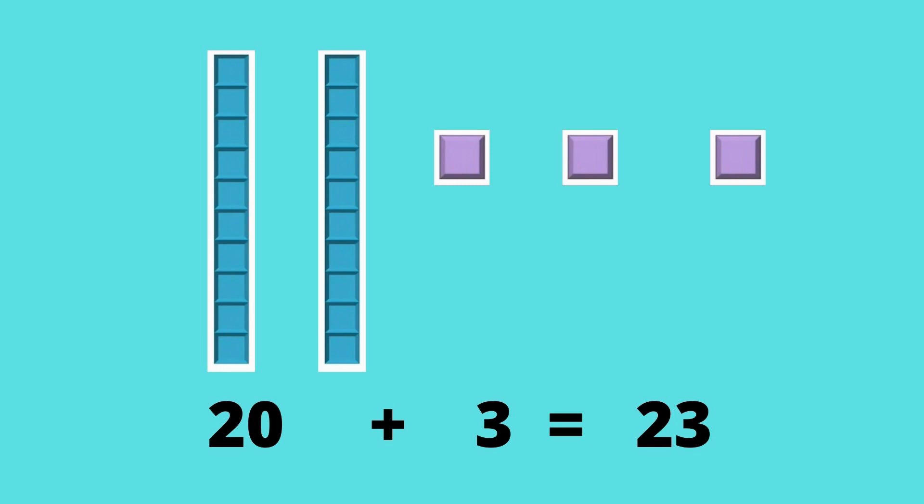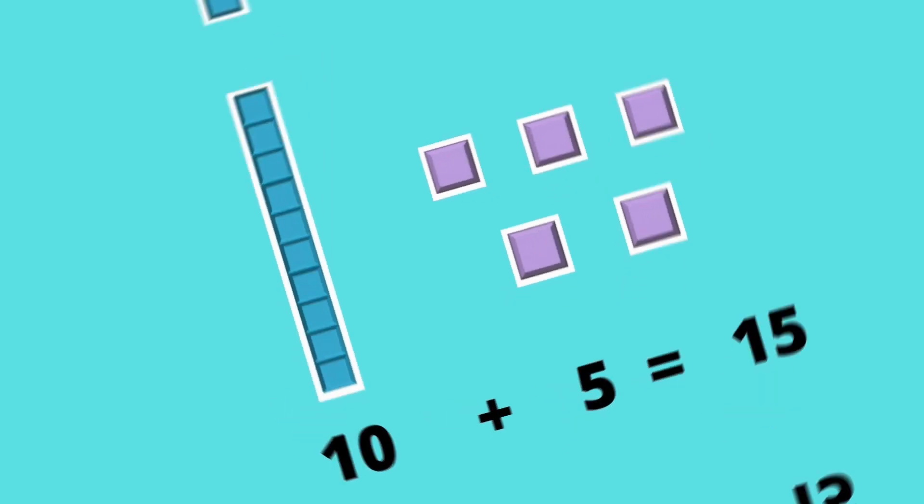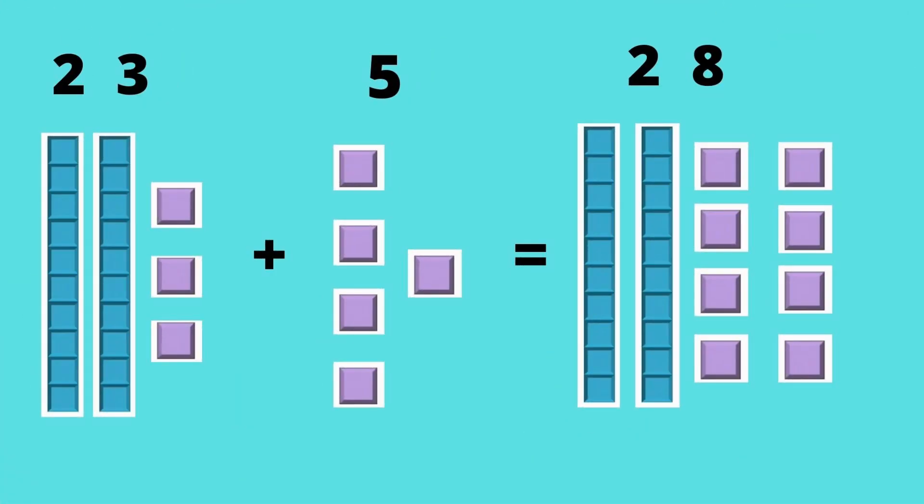Here we have two tens, which is 20, and three ones, making 23. Similarly, ten and five makes 15. Here we have two bars of tens, which is 20, and three ones blocks, which means 23, and we have five more single blocks, which means five ones. Now all single blocks will be combined together, making eight ones and two tens, so the total is 28.